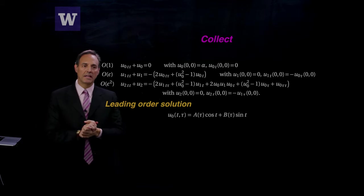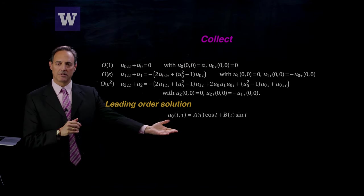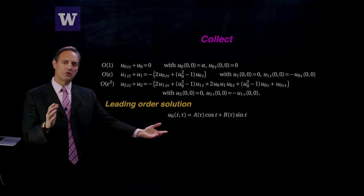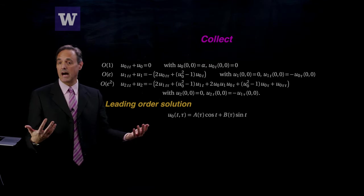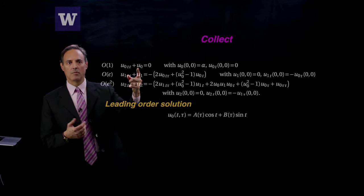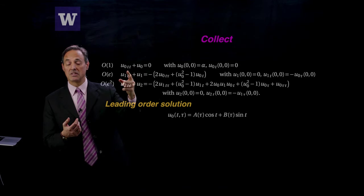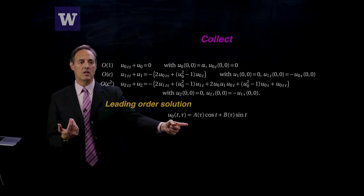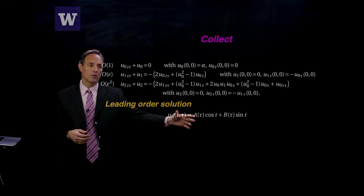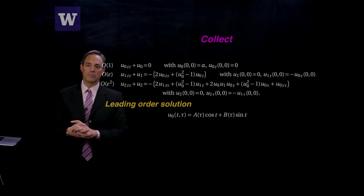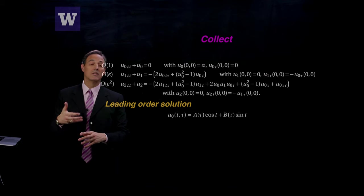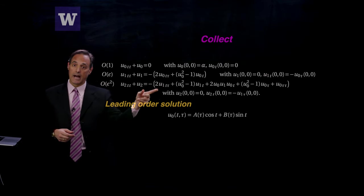The leading order solution is cosines and sines with some constants a and b in front of them. But those constants, they're not really constants, they can be functions of tau actually. At leading order, u0 which was only dictated by behaviors in t, gives you a solution of t, but a and b can be functions of tau. Your leading order solution has some constants, but we're going to determine some evolution of a, those constants, so that solvability is satisfied at higher order.